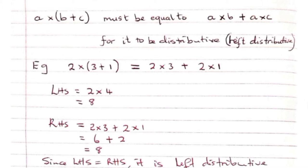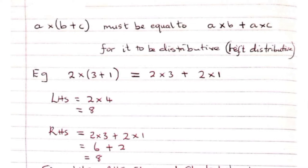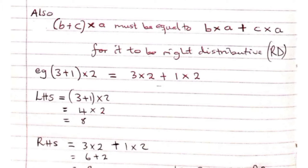We must get the same answer whether we add first then multiply by A, or multiply A by each term inside the parentheses separately. If we get the same answer, we say multiplication is left distributive over the plus sign.